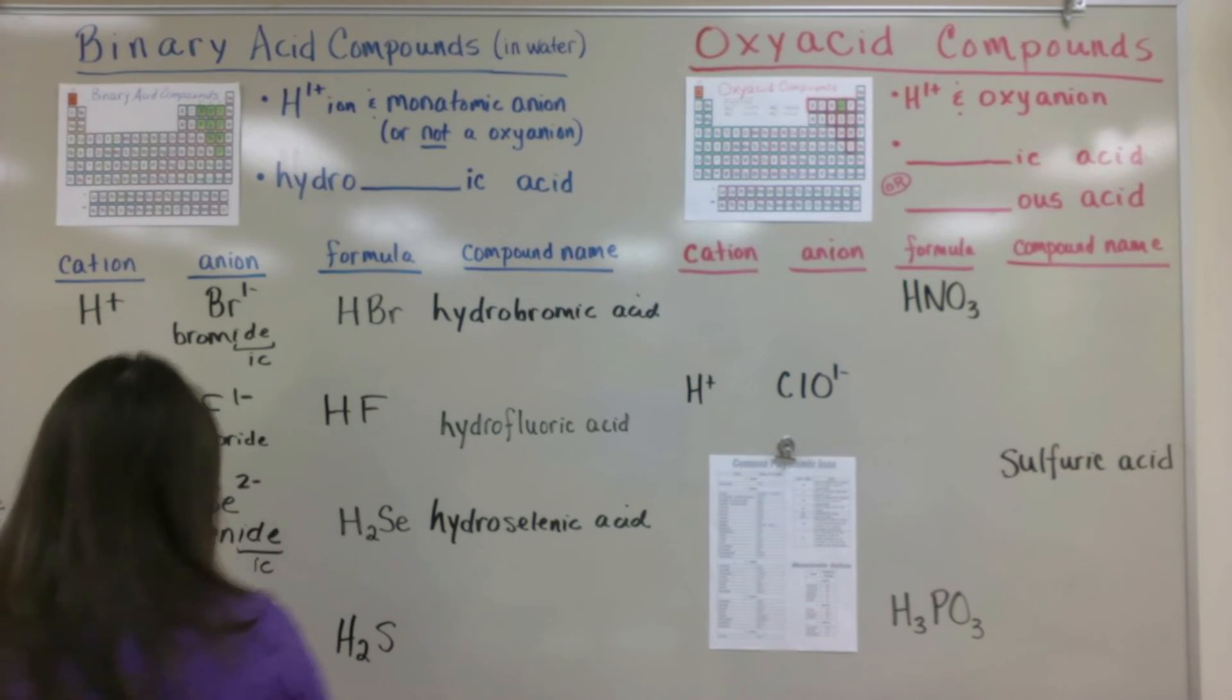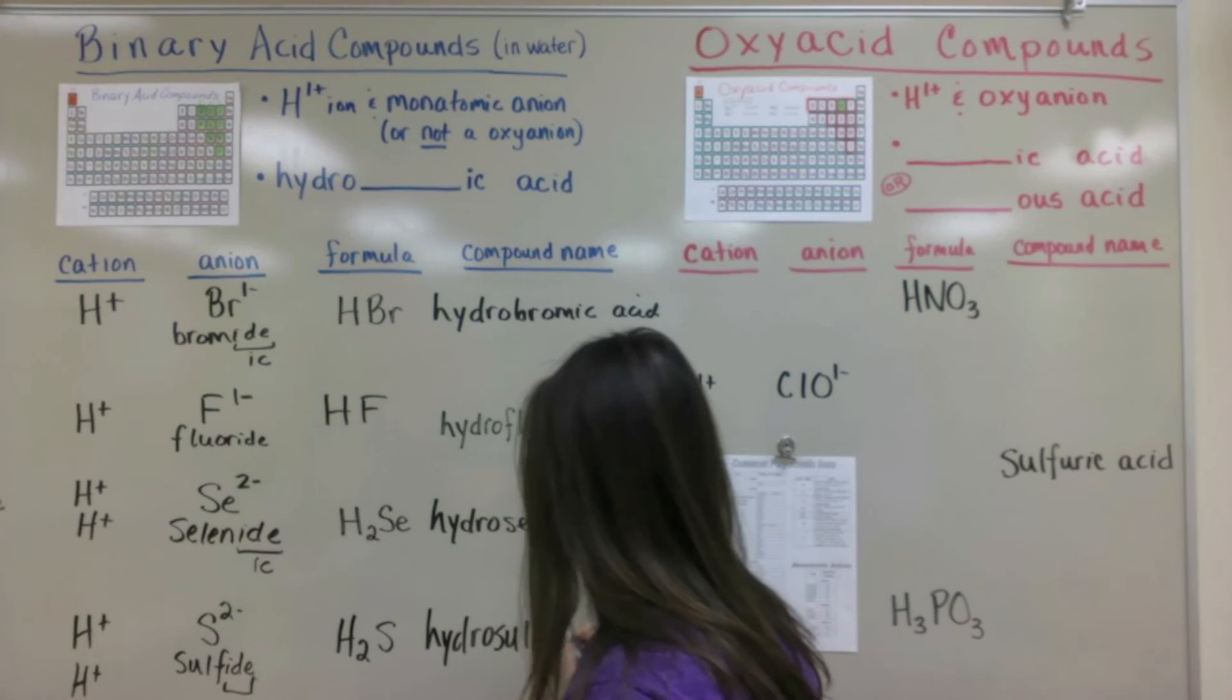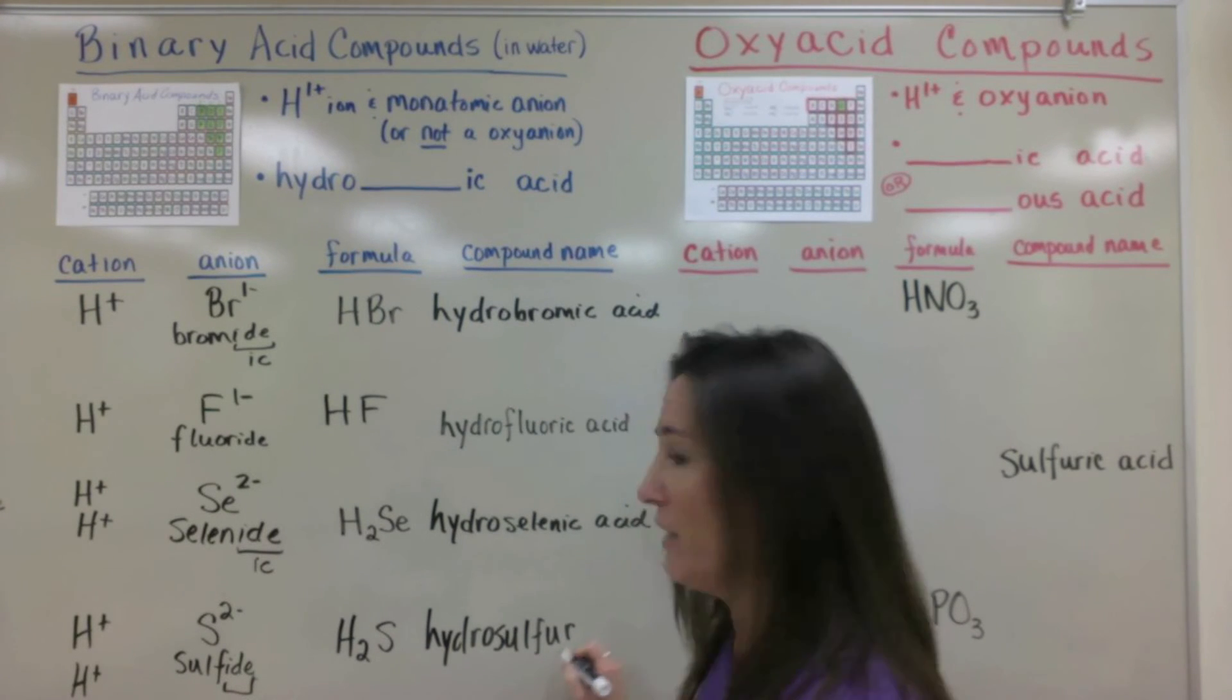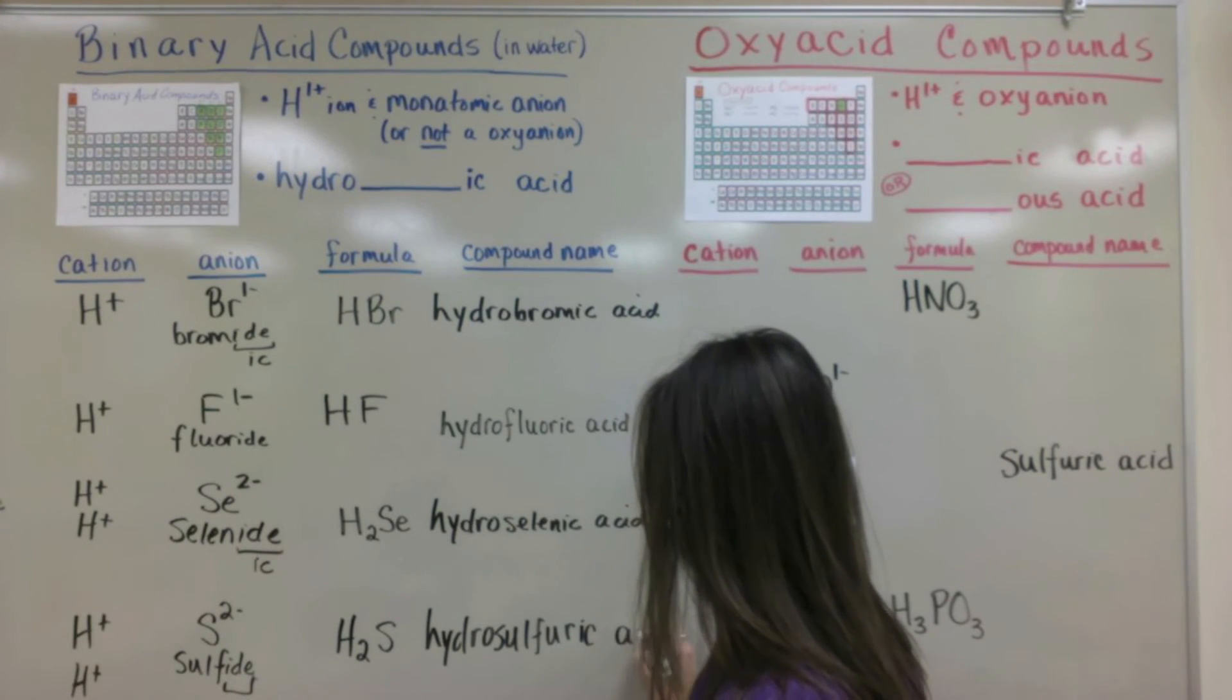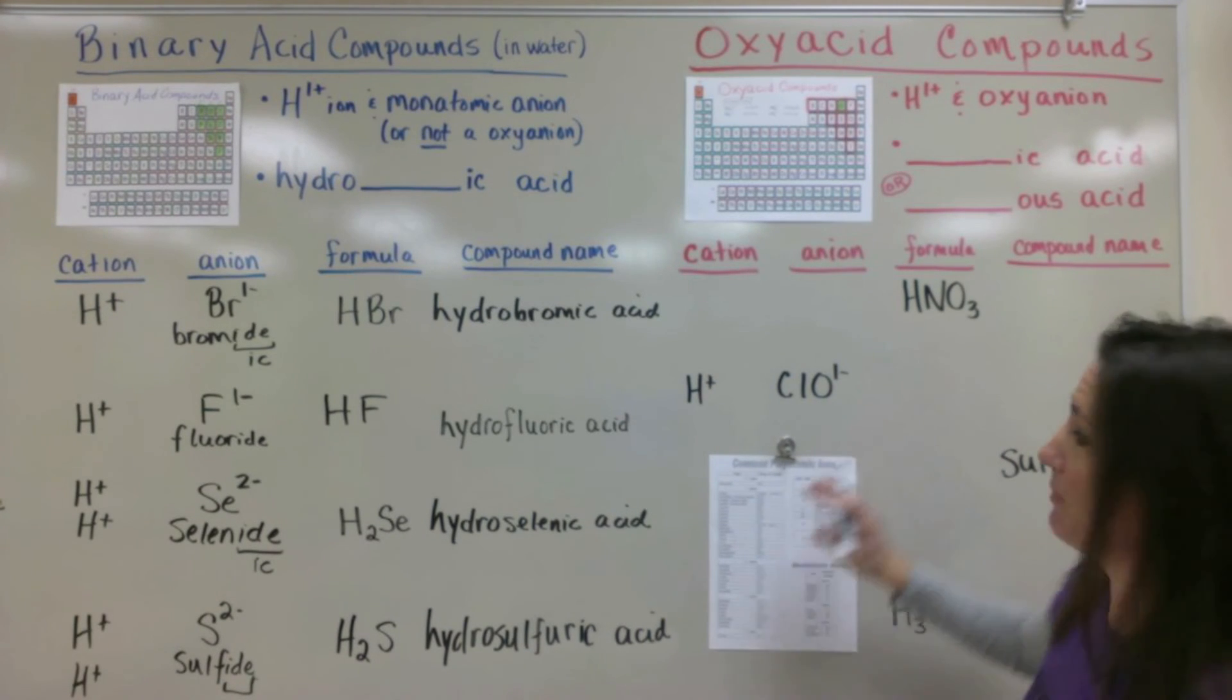And again ide turns into ic. And so this one turns into hydro, sulfur. And then chemists will add in the ur and then add in ic acid so that the sound of the name is good. Next is oxyacids.